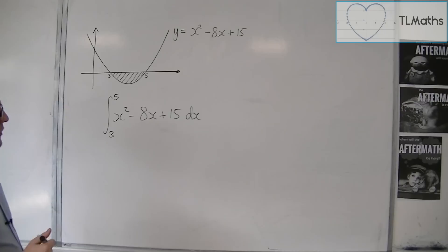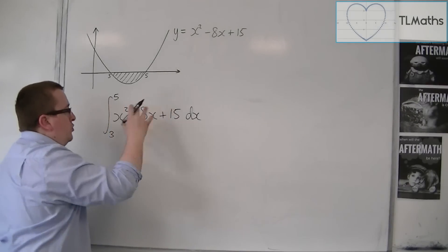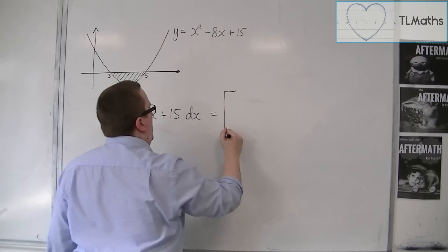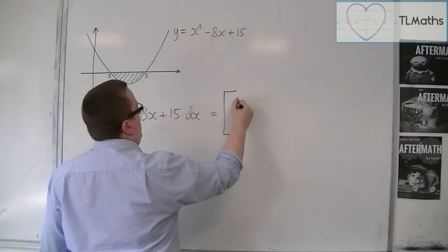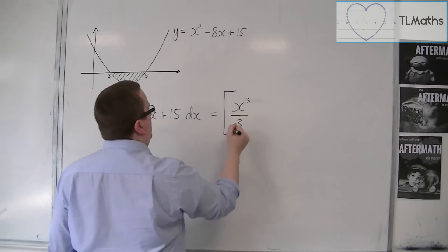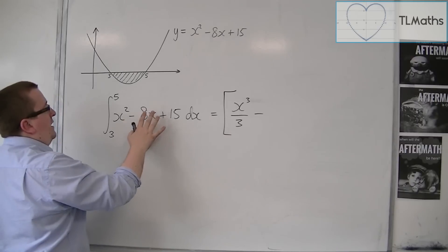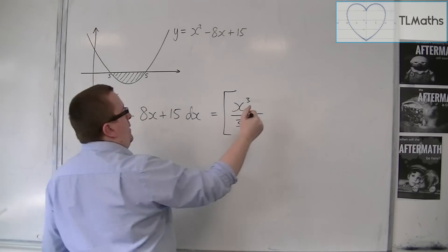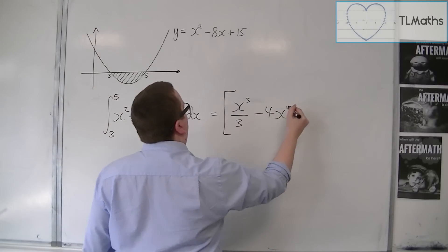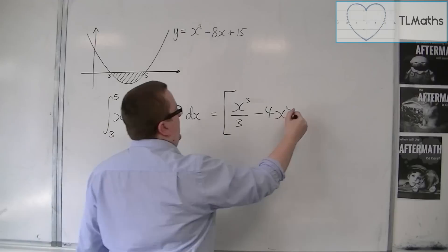So we go straight in, in square brackets, add 1 to the power, divide by the new power. So x cubed over 3, take away. We're going to add 1 to the power, divide by the new power. So we'll have minus 4x squared plus 15x.